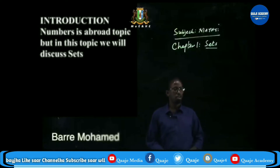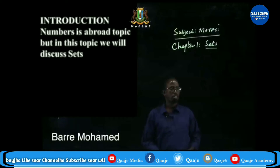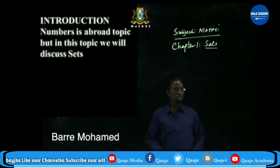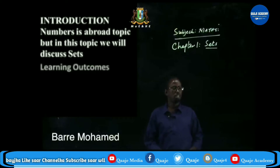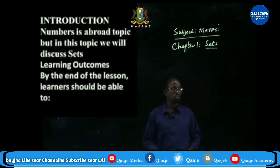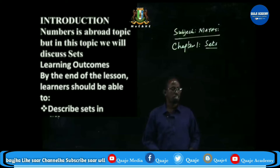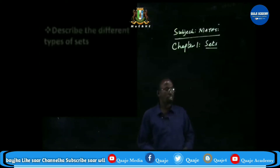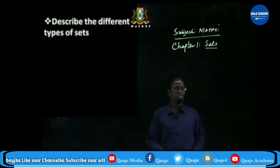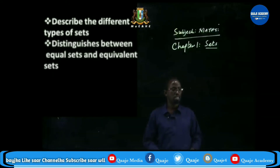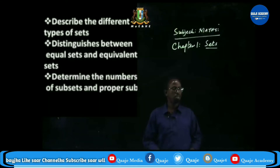Numbers is a broad topic, but in this topic we will discuss sets. Learning outcomes: by the end of the lesson, learners should be able to describe sets in different ways, describe the different types of sets, distinguish between equal sets and equivalent sets, and determine the number of subsets and proper subsets.